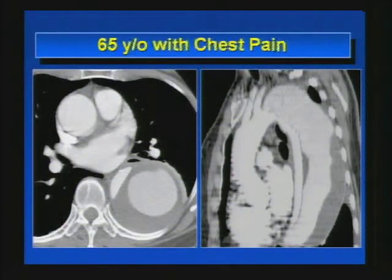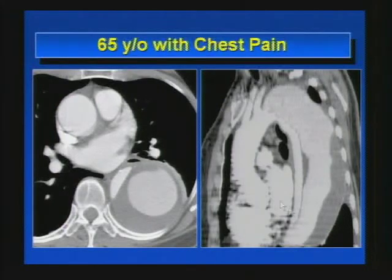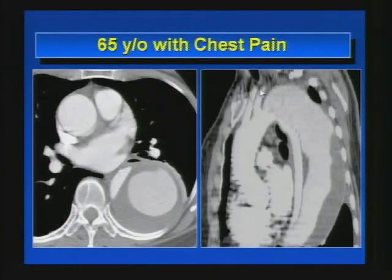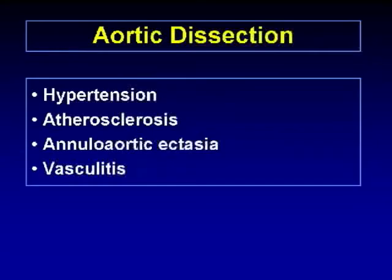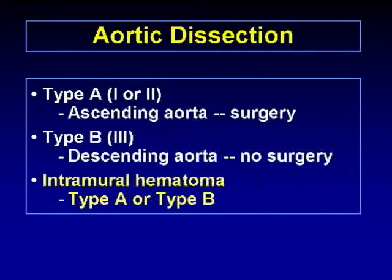Next case: 65-year-old with chest pain showing a dissection of the thoracic aorta. Key points include compression of the true lumen, which is deviated anteriorly and medially, and is significantly compressed by a false lumen that is partially thrombosed. Here we see the left carotid artery and left subclavian artery — the dissection starts immediately distal to the left subclavian, making this a type B dissection. Hypertension, atherosclerosis, annuloaortic ectasia, and vasculitis are associated risk factors. Type A dissection involves the ascending aorta and is managed surgically; type B involves the descending aorta and is managed medically.